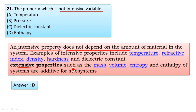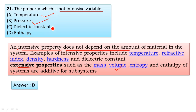Extensive property is a property which depends on the concentration or amount of the material. Examples: mass, volume, entropy, and enthalpy are extensive properties. In the four options, temperature, pressure, and dielectric constant are intensive properties, whereas enthalpy is not an intensive property. Hence option D is correct.